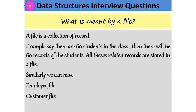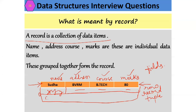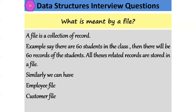What is a file? A file is a collection of records. For example, if there are 60 students in a class, there will be 60 student records, and all these related records are stored in the file. We say it's an employee file or a customer file — all information pertaining to those entities is stored in the respective file.